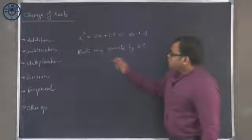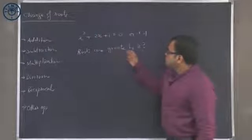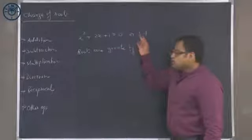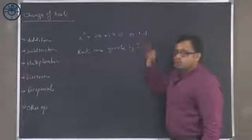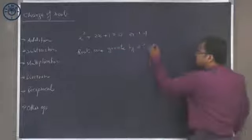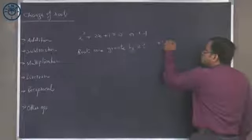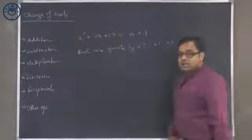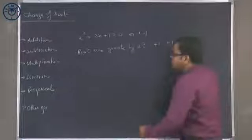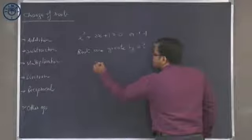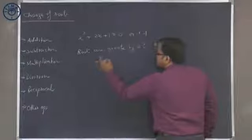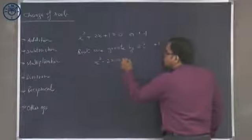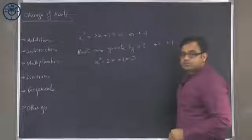If I am looking for the equation whose roots are greater by 2, that means the roots would be minus 1 plus 2, which is plus 1 and plus 1. If the roots are plus 1 and plus 1, then the equation will be x minus 1 whole square, which becomes x squared minus 2x plus 1 is equal to 0.